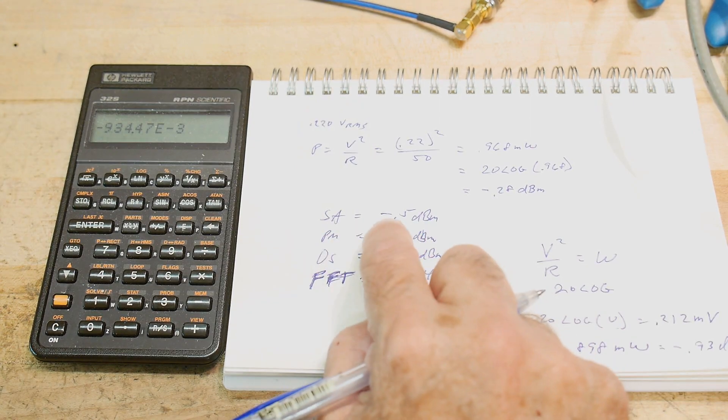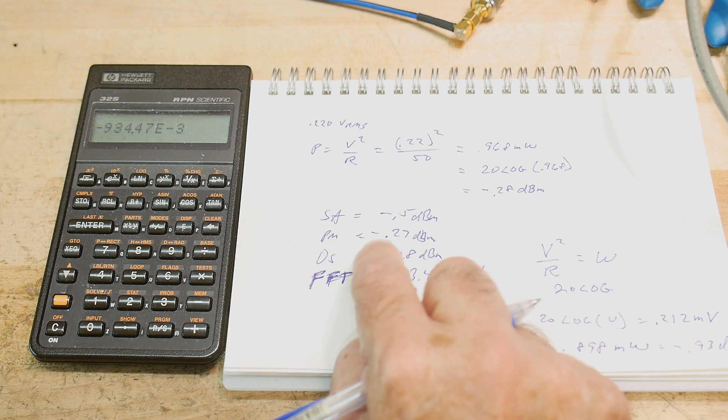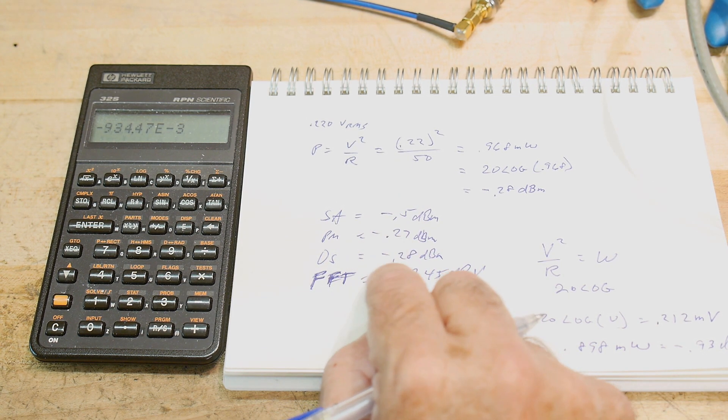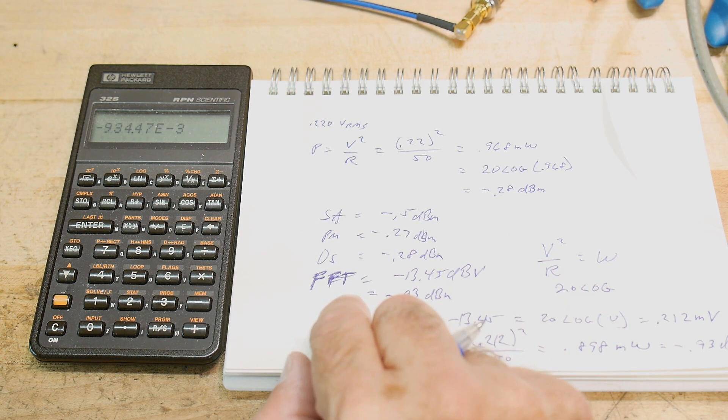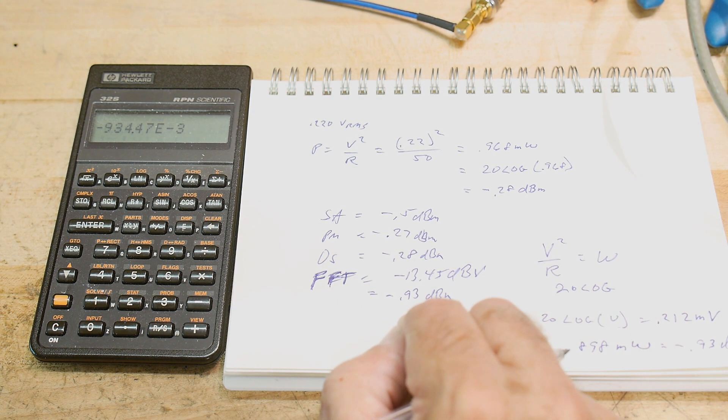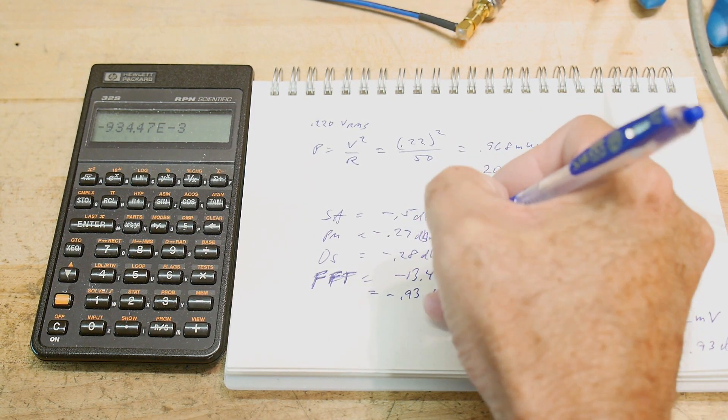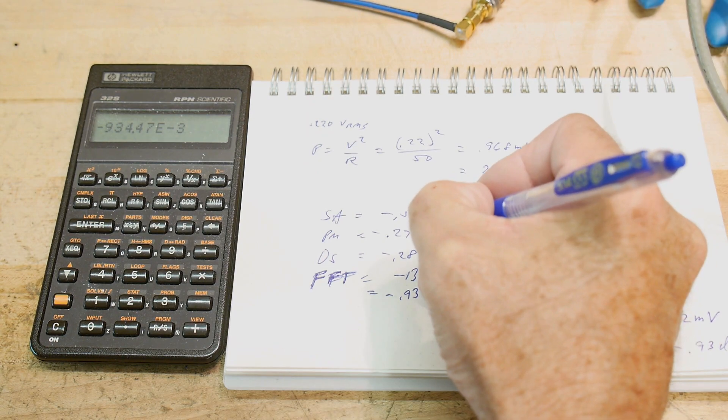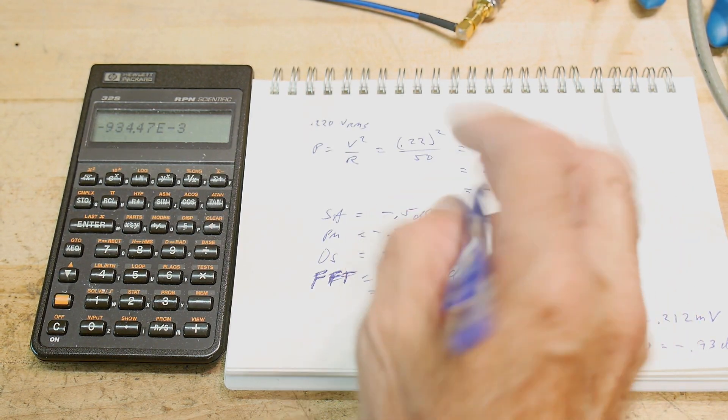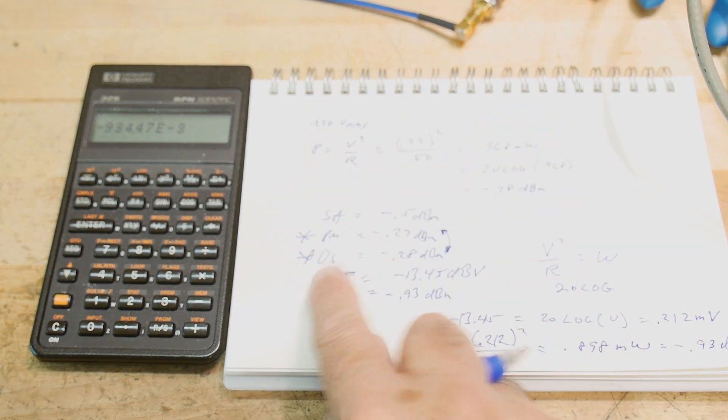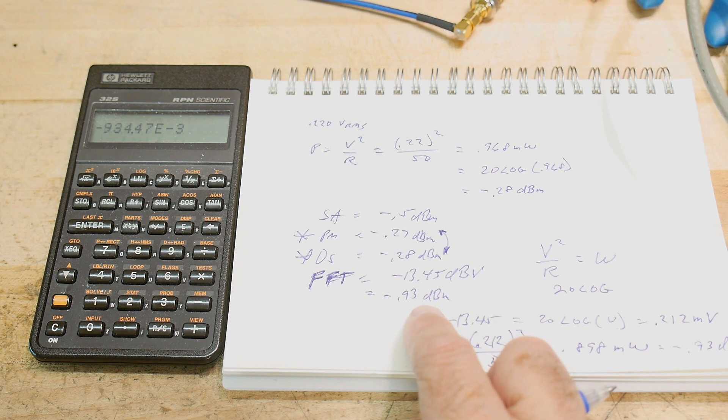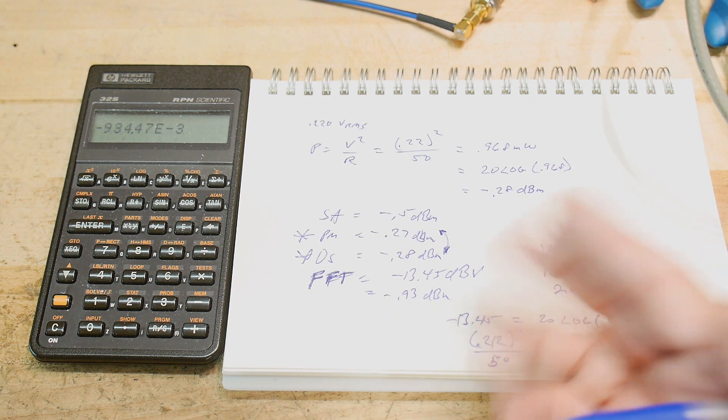With a spectrum analyzer we measured minus 0.5 dBm. With a power meter we measured 0.27 dBm. With an oscilloscope with volts RMS and a calculation we measured 0.28 dBm. With an FFT using the peak function we got minus 0.93 dBm. So these guys match really really well and I trust the power meter and I trust the voltage measurement through a 50 ohm load. So these are the true numbers. I'll give them a gold star.